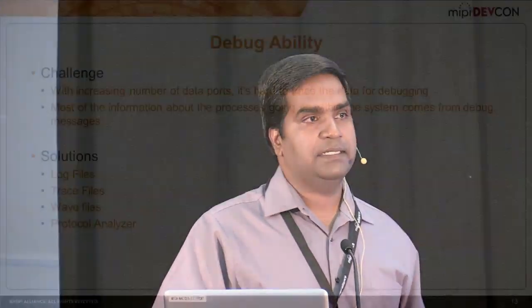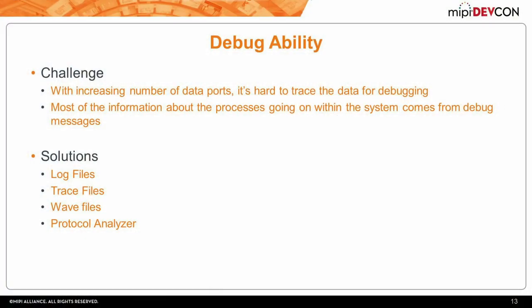As with any verification environment, the most challenging part is debuggability—how easily you can debug. In this particular case, it's a fairly easy protocol, but what you see on the bus is zeros and ones that are time-interleaved; every data is interleaved and commands are also mixed. There's really no way to make sense out of it visually. So the debug messages and other debug features are the only things that will help you do any sort of debugging. In the SoundWire test suite, Synopsys provides a bunch of debug features like log files, trace files, waves, and protocol analyzer.